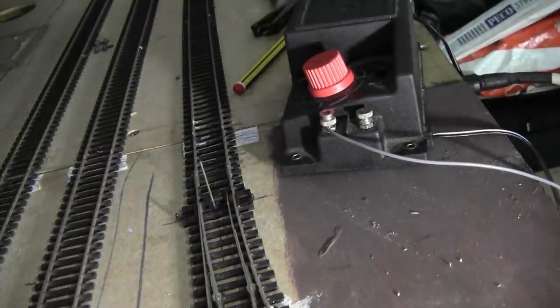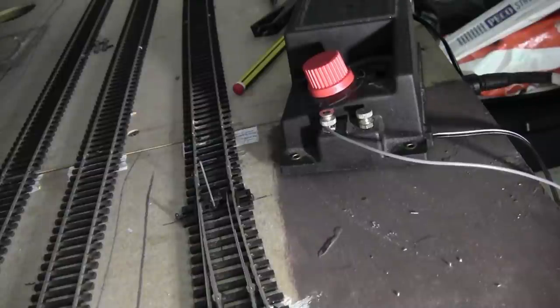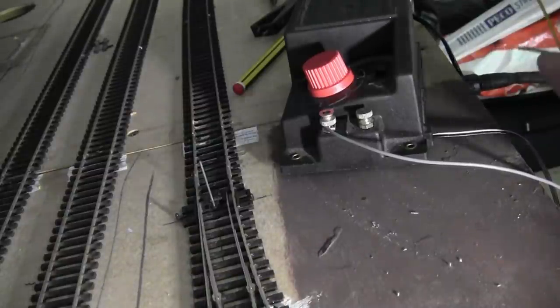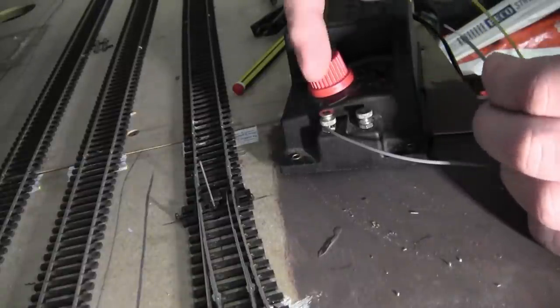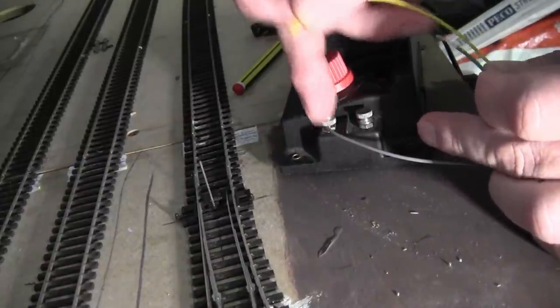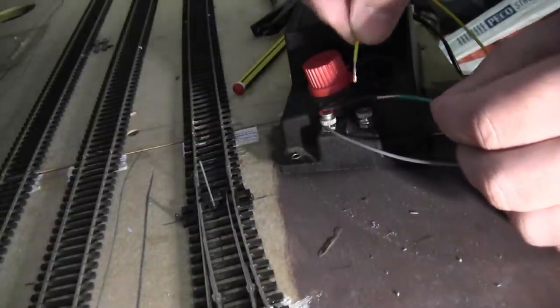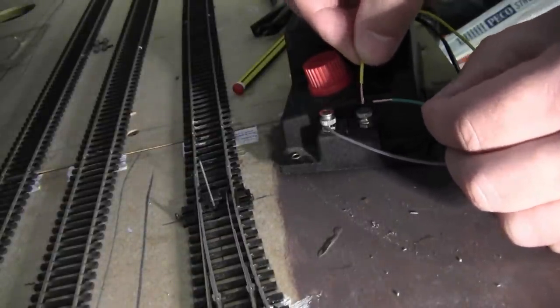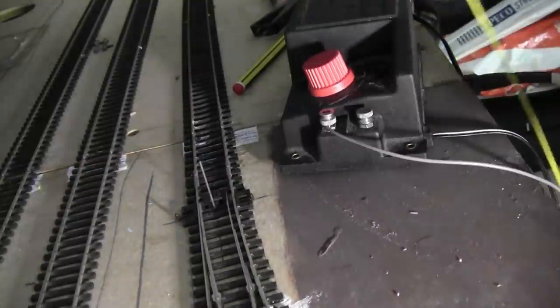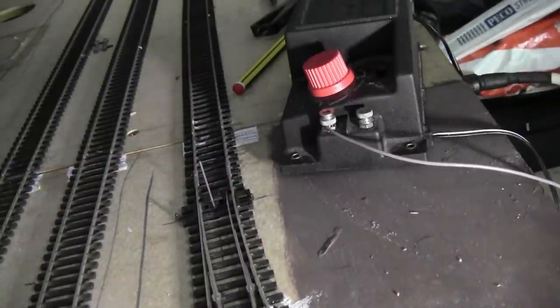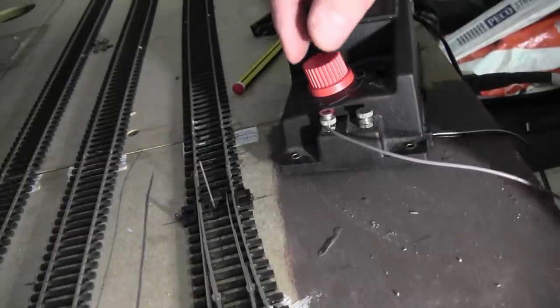So we're now going to test the solenoid just to make sure that it's working. I'm using this old Hornby transformer. It's got 15 volt output, so that should be enough to throw the solenoid. As you can see, we've got the switch wire, which is the gray, which we mentioned earlier, and these are to throw it one way or the other. So that seems to be working. I'm quite happy with that, so I can now put all the cables back to the control panel.